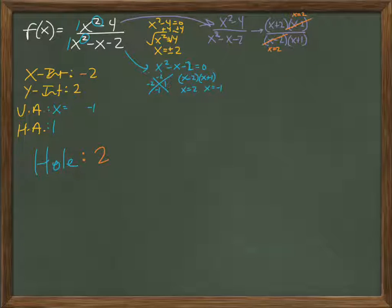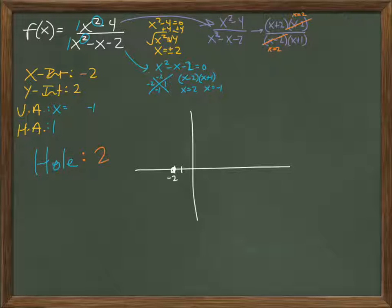So, now, if I were to make a graph. So, x-intercept at negative 2. That's negative 2. Y-intercept at 2. Vertical asymptote at negative 1. And horizontal asymptote at 1.